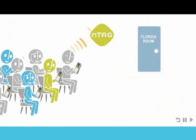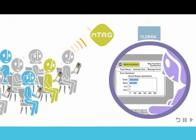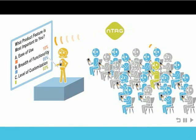After sessions, the n-tag system allows conference organizers to measure satisfaction in real time. Speakers can poll their audience and attendee responses are immediately available for display and discussion.